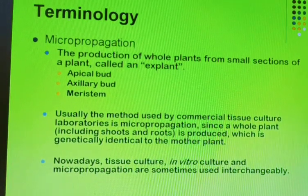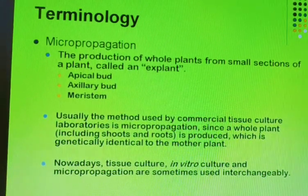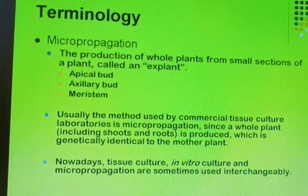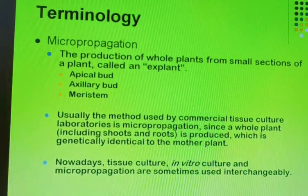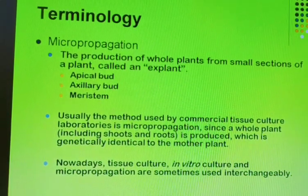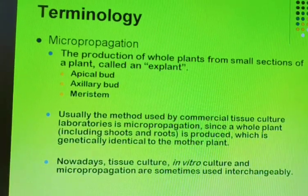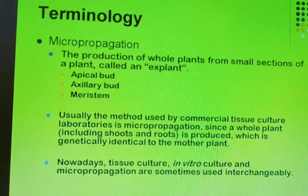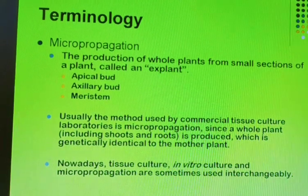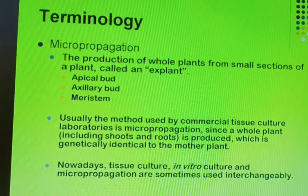Micropropagation is the production of a whole plant from a small section of a plant known as the explant — such as the apical bud, axillary bud, or meristematic cells. The whole plant is grown in the lab from these explants. Micropropagation is commercially available; in Gujarat, most labs grow banana, and banana tissue culture plants are very famous in India.